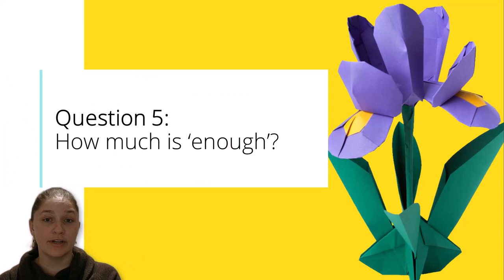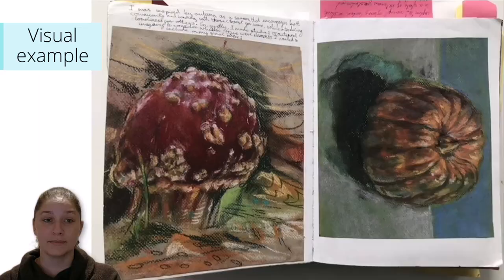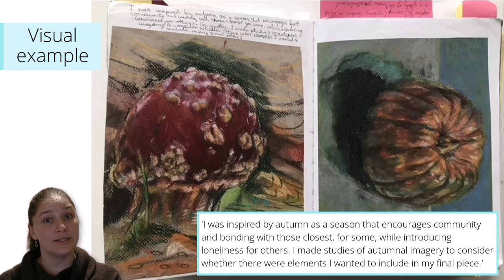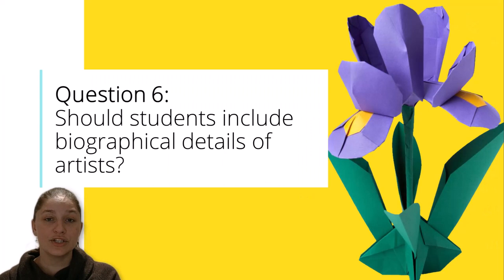For question five, the purpose of integrated written annotation is to be supportive of the visual evidence and not in any way a replacement for the practical work. The expectation is quality over quantity. There is no set amount of annotation expected, and there is no requirement for students to produce extended pieces of writing. This annotation is a good example of enough. The candidate annotates: I was inspired by autumn as a season that encourages community and bonding with those closest for some, while introducing loneliness for others. I made studies of autumnal imagery to consider whether there were elements I wanted to include in my final piece.